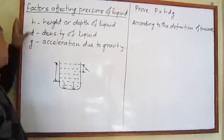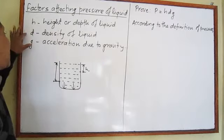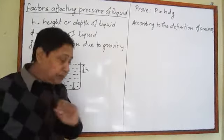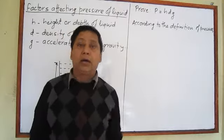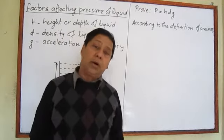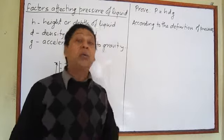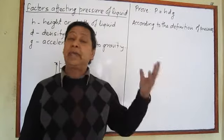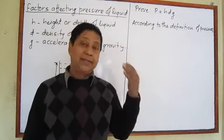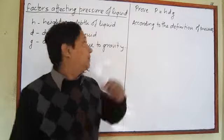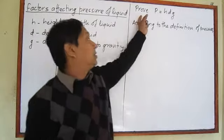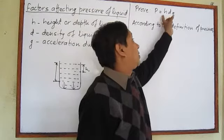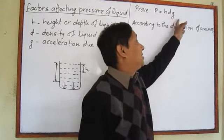This way, pressure depends on three factors: H, D, and G. Now let's talk a little more about this — let's prove that P equals H × D × G.